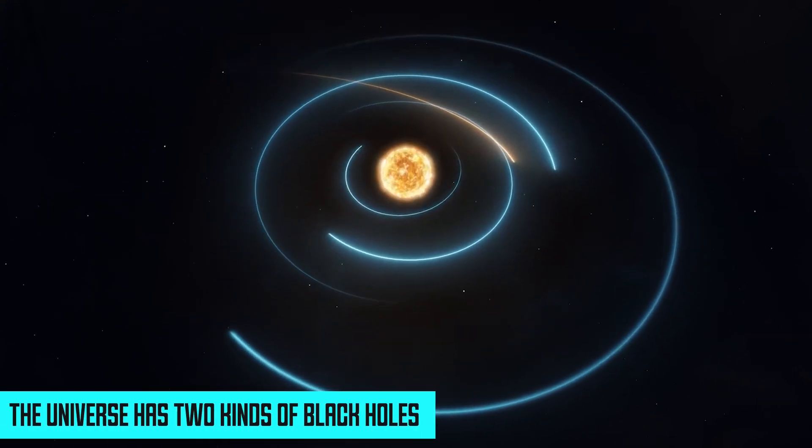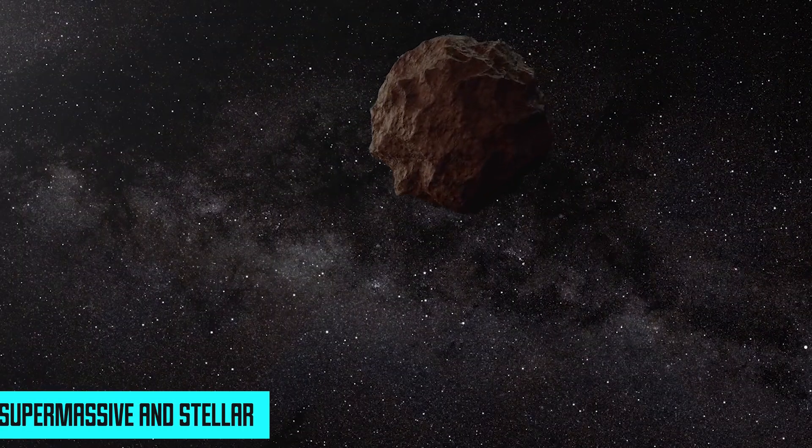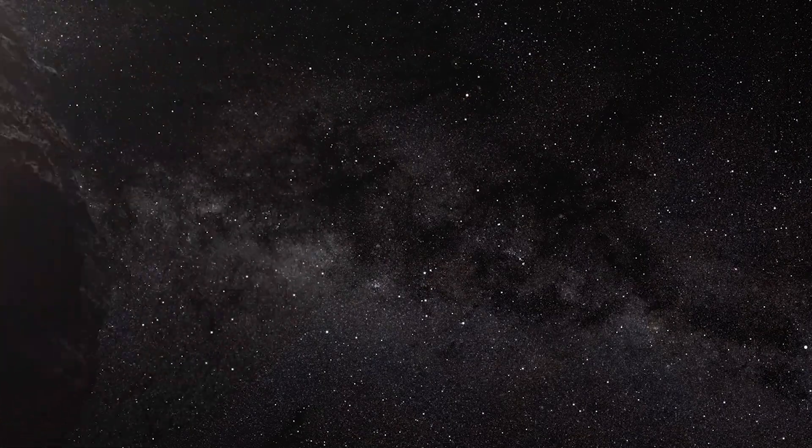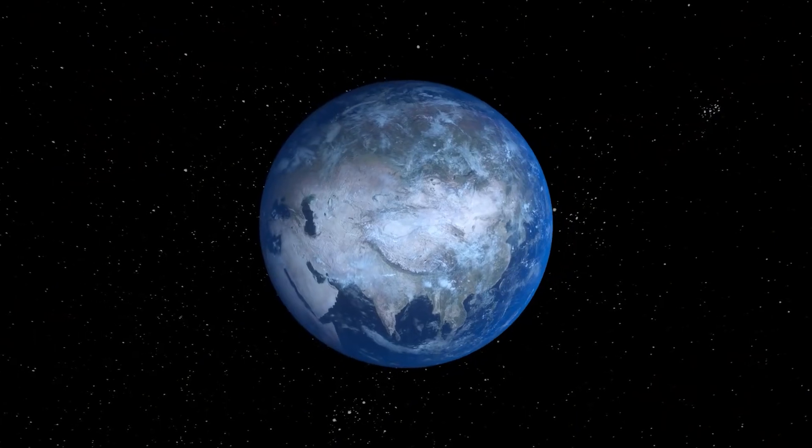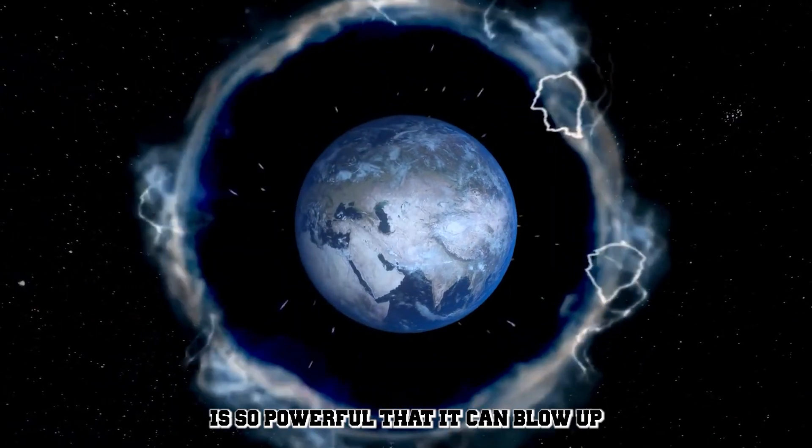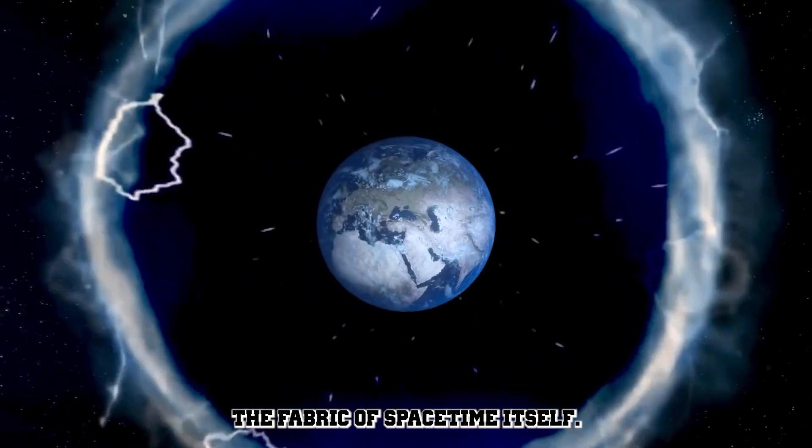The universe has two kinds of black holes, supermassive and stellar. The first variety, supermassive black holes, can be found at the center of most galaxies, including our Milky Way. These giants are millions if not billions of times more massive than our sun, and their gravitational force is so powerful that it can warp the fabric of space-time itself. However, they don't pose much of a danger to us for the time being.